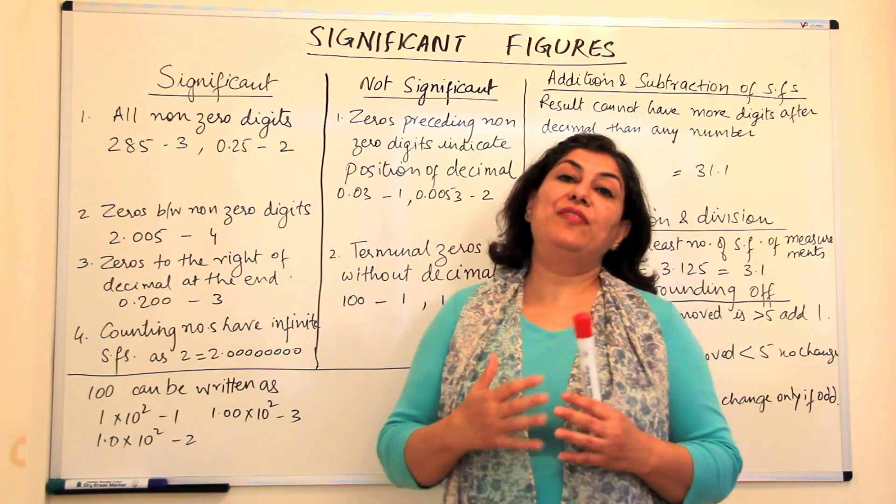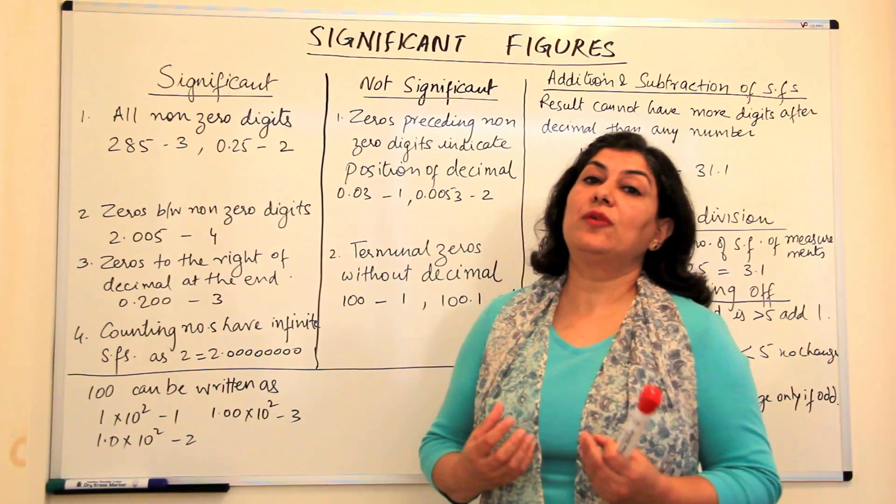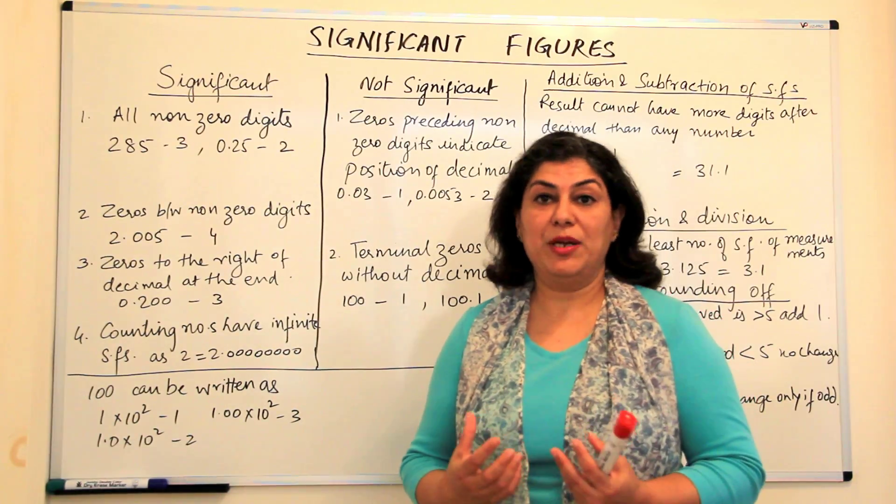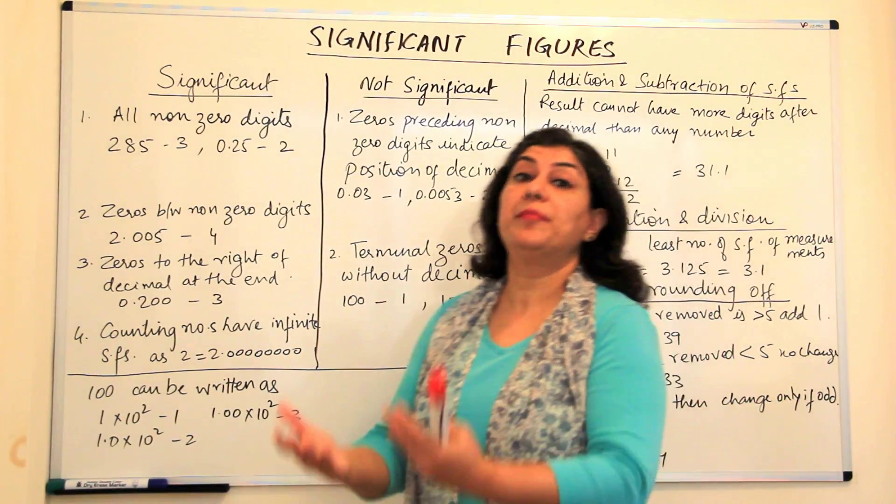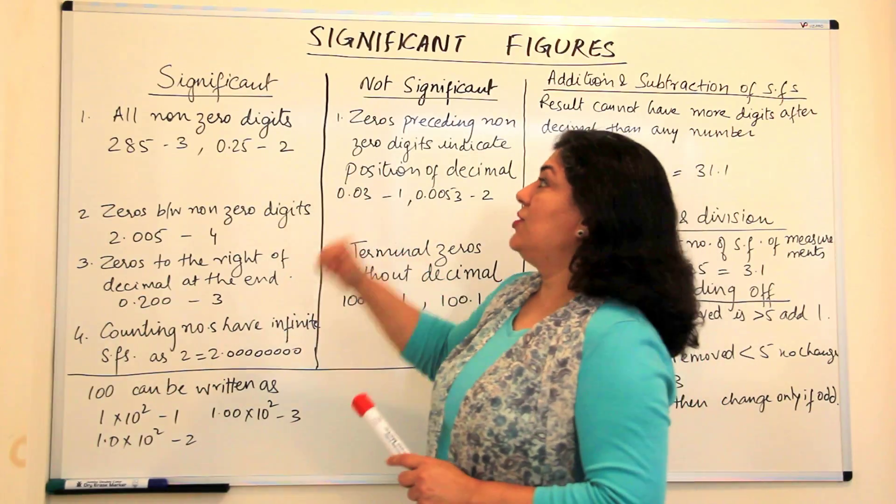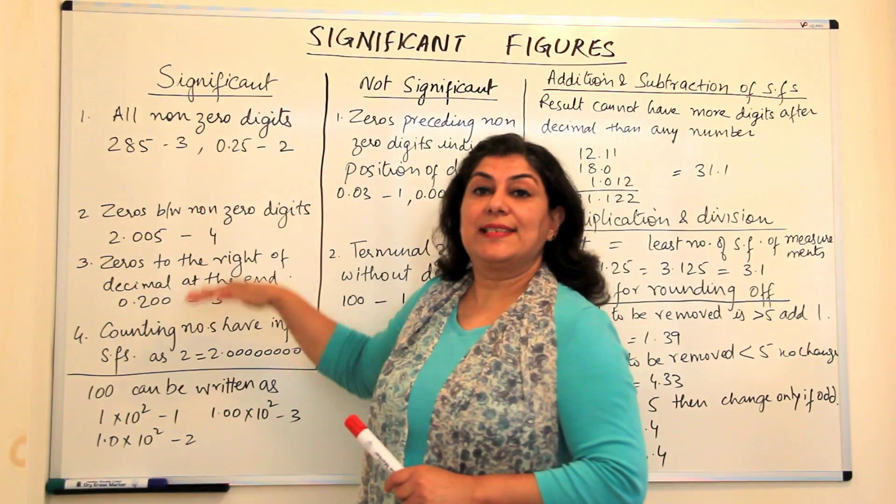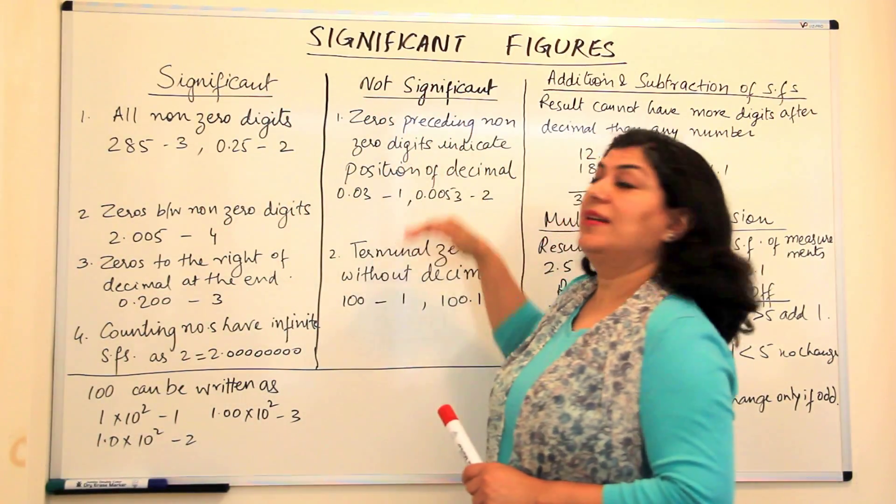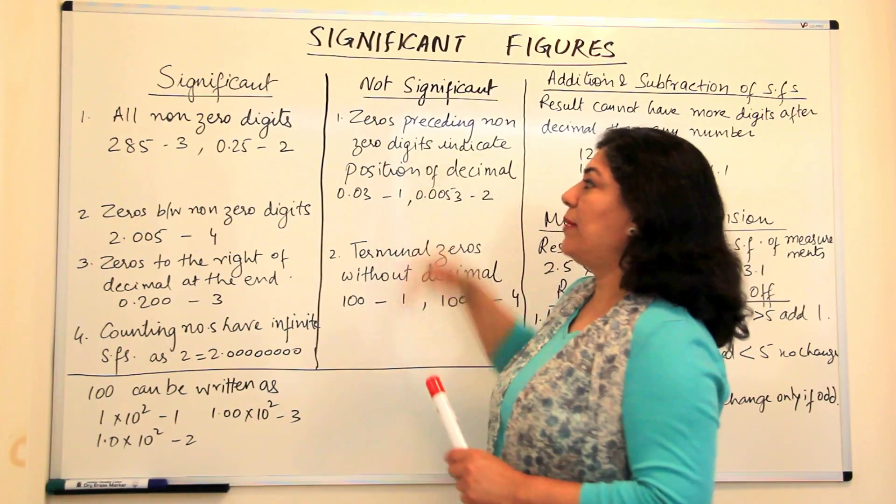There are certain rules that we follow when we find out the significant figures in a given measurement or when we are reporting our measurements. What are these rules? When are digits significant and when are they non-significant? I just tabulated them.